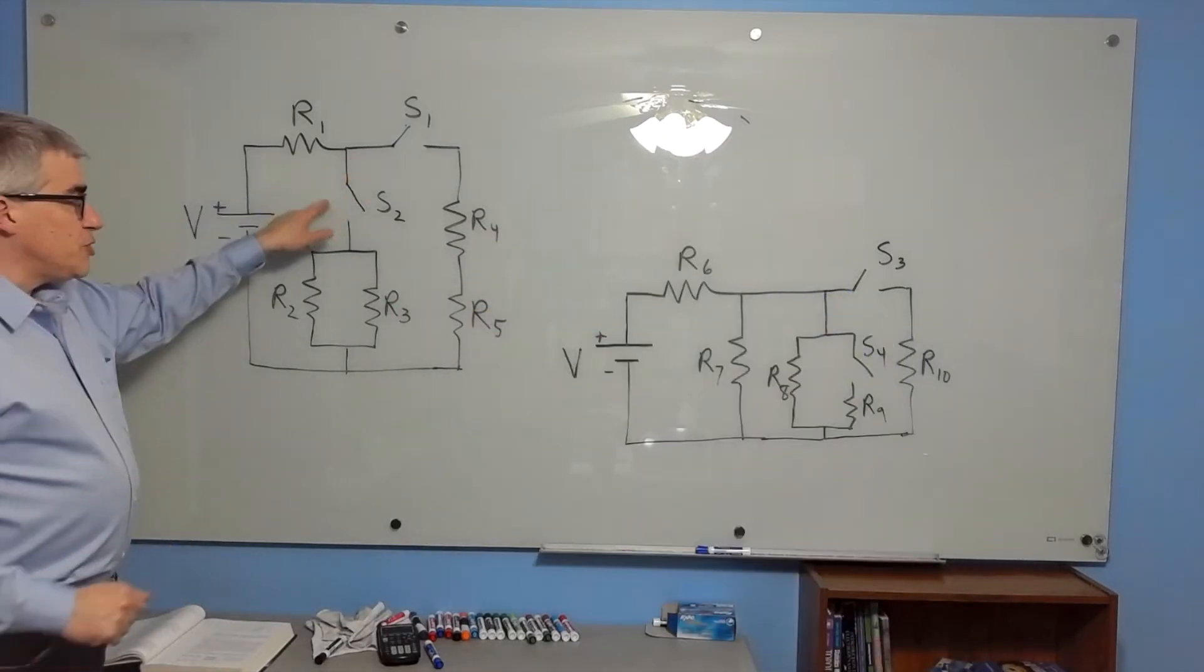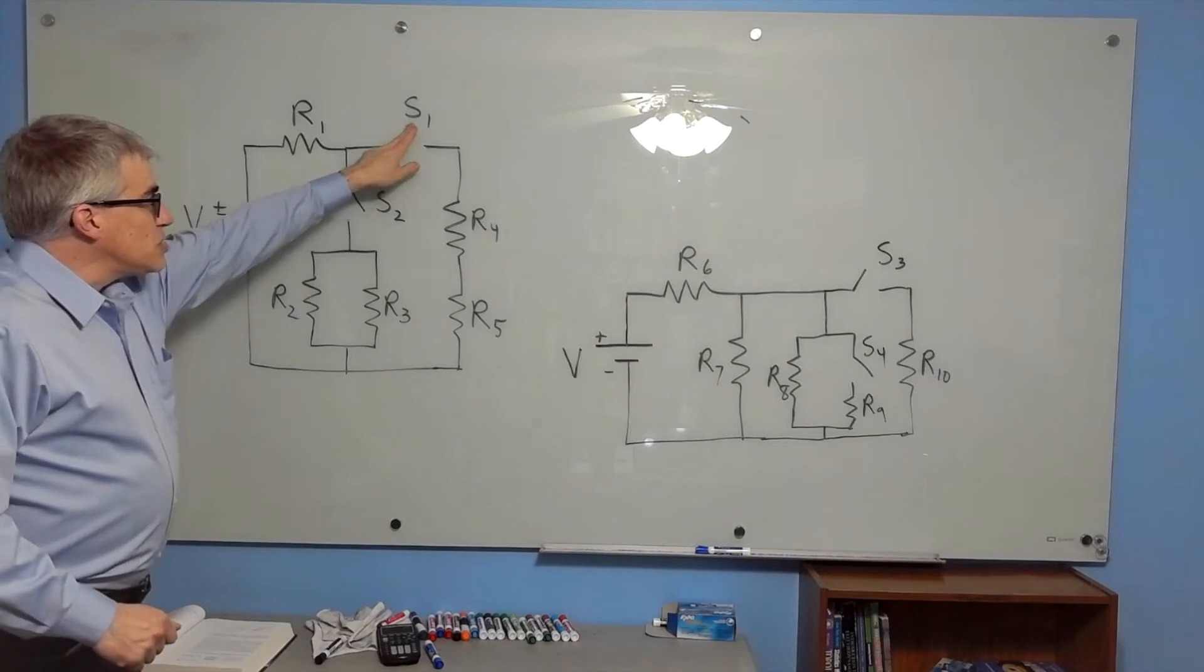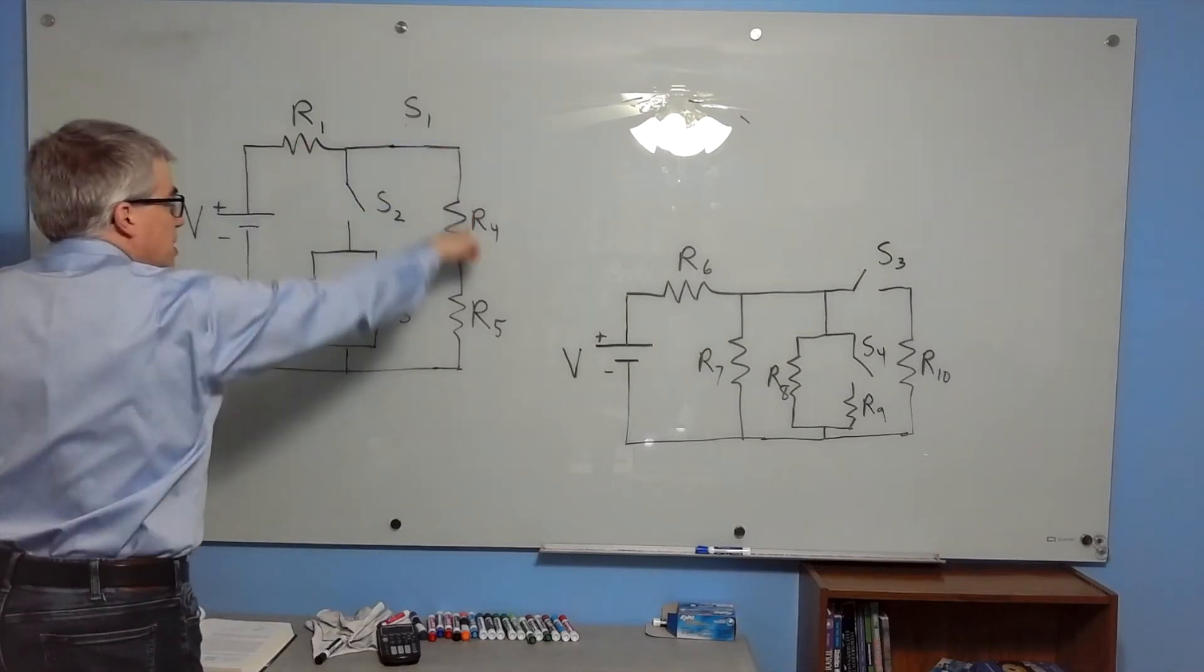If switch one and switch two are both open, nothing flows. If we close switch one, then we have current running through R1, R4, R5.